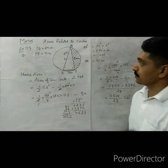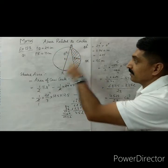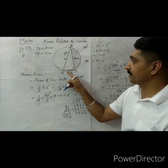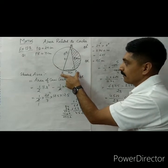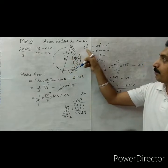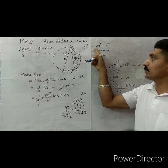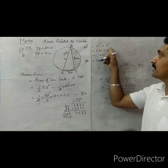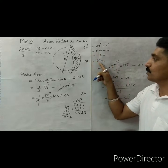Once again let's recapitulate the question. Here a circle is given whose diameter is not given, so we have to find the diameter first. Two chords QP and RP are given: RP = 7 and QP = 24. Applying Pythagoras theorem, QR is the hypotenuse, so QR² = 24² + 7² = 576 + 49 = 625. Taking the square root of both sides, QR = 25 centimeter.